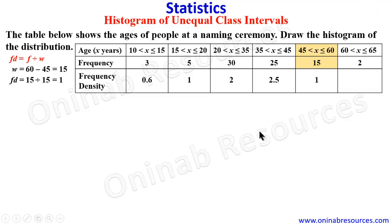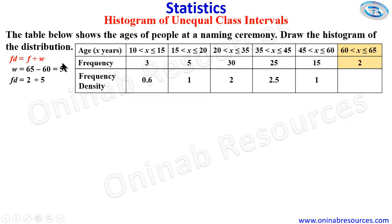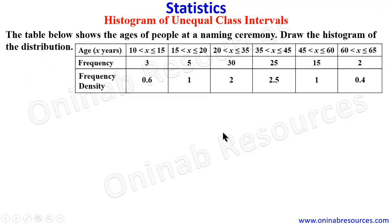For the last class interval, 60 to 65, the width will be 65 minus 60, which gives 5. The frequency density is going to be 2 divided by 5, which gives 0.4. We have now done justice to the frequency density column, so the next thing is to draw the graph.